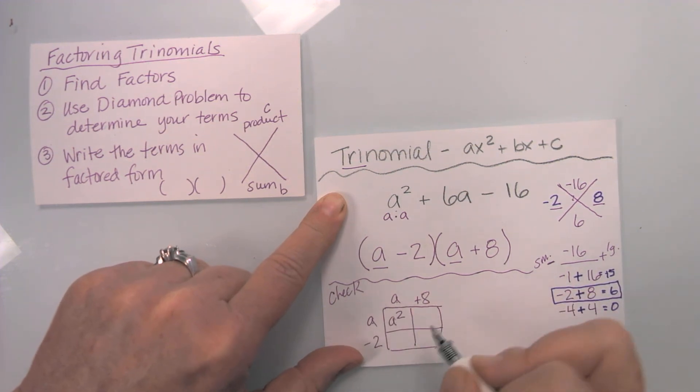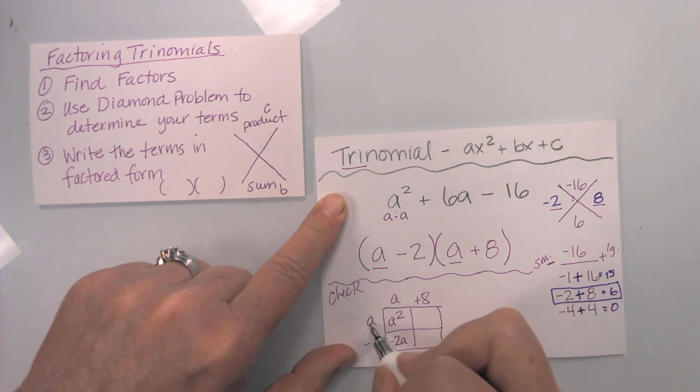So notice that I have a minus two, and then I have a plus eight. A times a is a squared. A times negative two is negative two a. A times eight is eight a. And negative two times positive eight is negative 16.